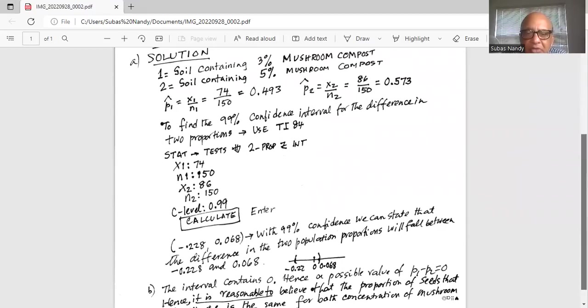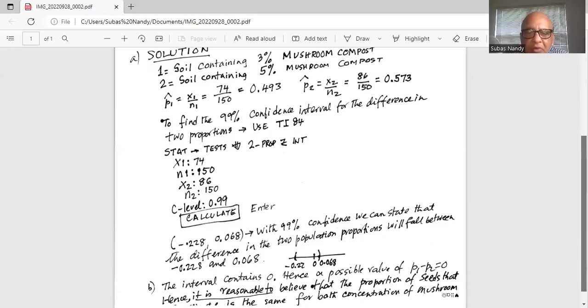So with 99 percent confidence we can state that the difference in the two population proportions will fall between minus 0.228 and 0.068. Notice minus 0.228 is on the left of zero on the number line and 0.068 is on the right of zero being positive.